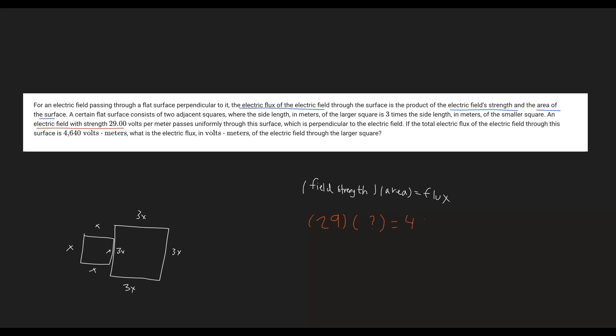The total flux is 4640 volts times meters. We can do a simple calculation to find the total area. We have area equals 4640 divided by 29, so the area would be 160 meters squared.